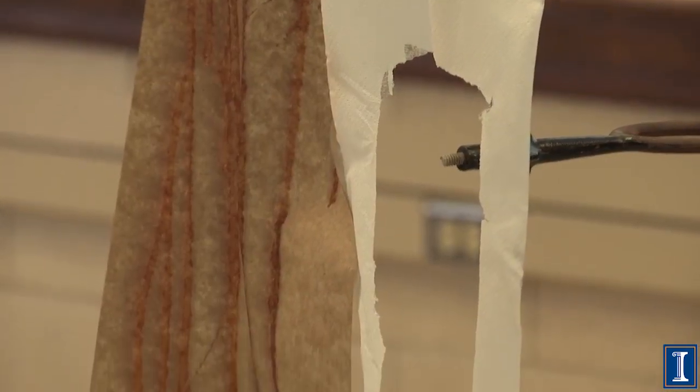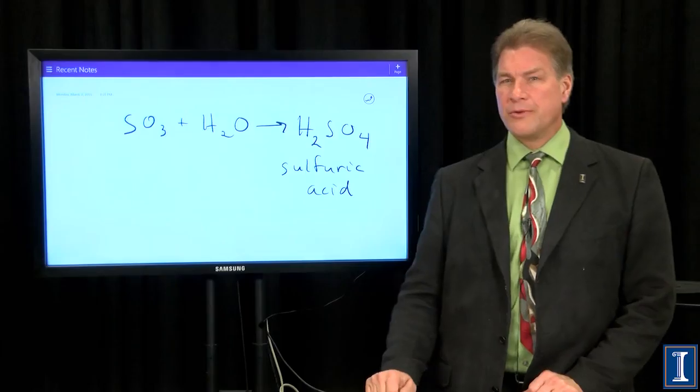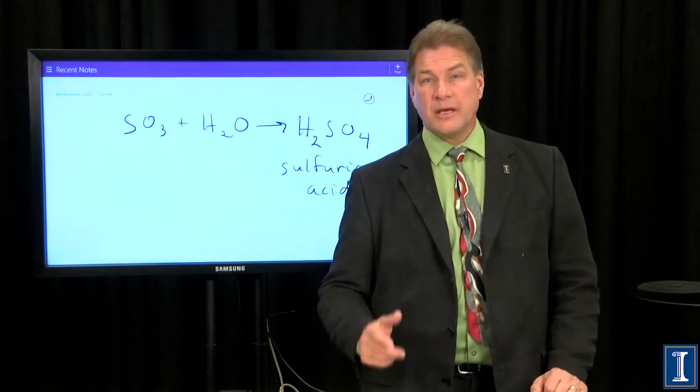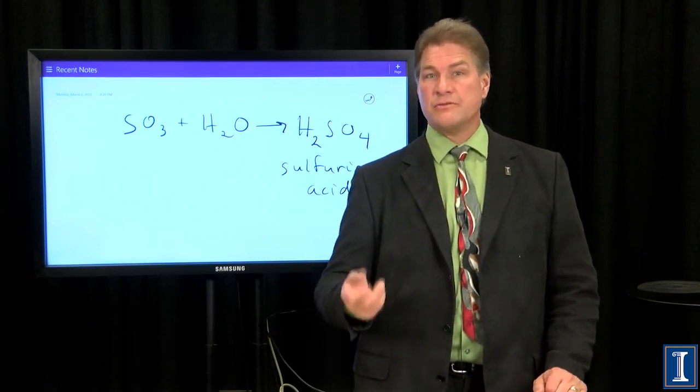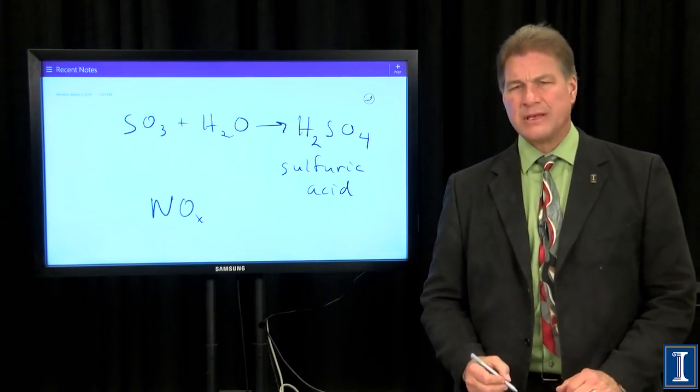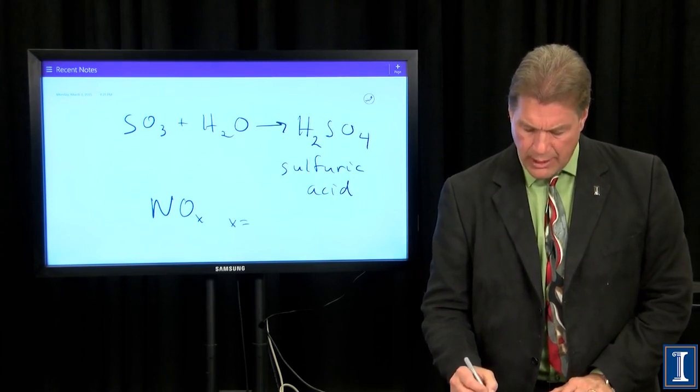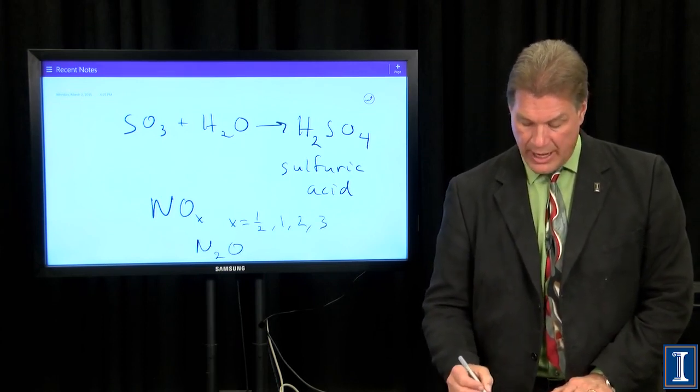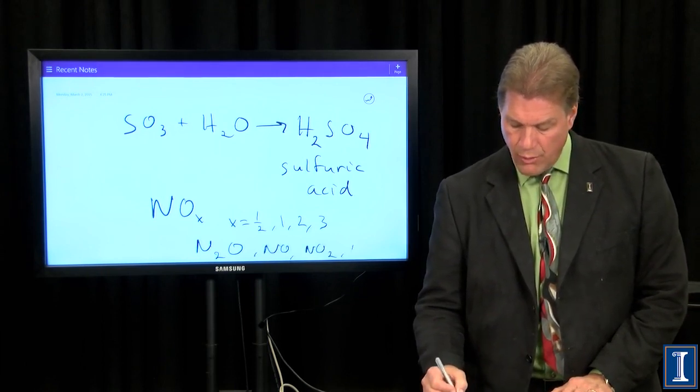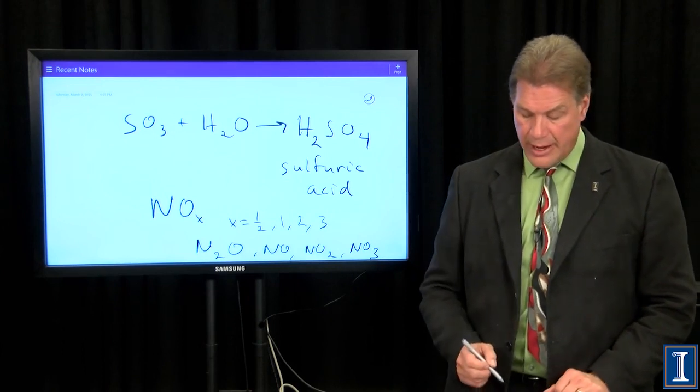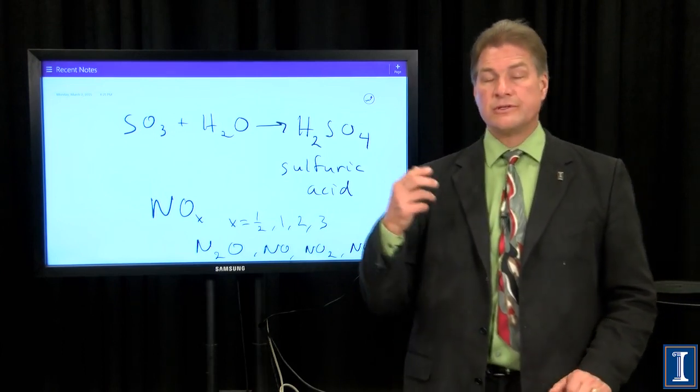You might say, whoa, you mean there's some nitrogen in the coal? Well, yes, there is some nitrogen in the coal, but that's not our main culprit. When we burn coal, the air is 80% nitrogen. Some of that will actually burn, will combine chemically into nitrous oxide compounds. They're called NOx. You might say, what is X? Well, X is a number. X could equal 1 half, 1, 2, or 3. In other words, I could make N2O, that's the one half, NO, NO2, or NO3. Those nitrous oxide compounds also will do this same type of reaction, and instead of turning into sulfuric acid, it turns into nitric acid.